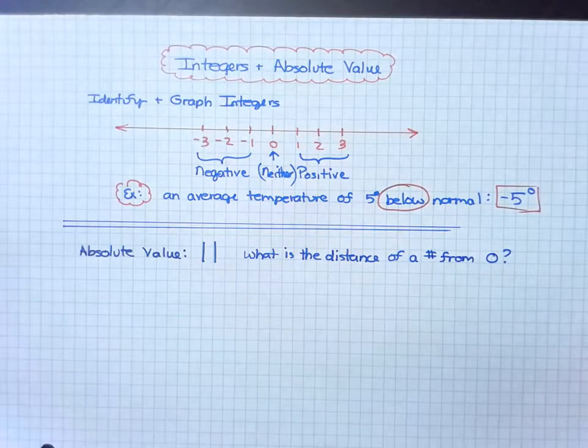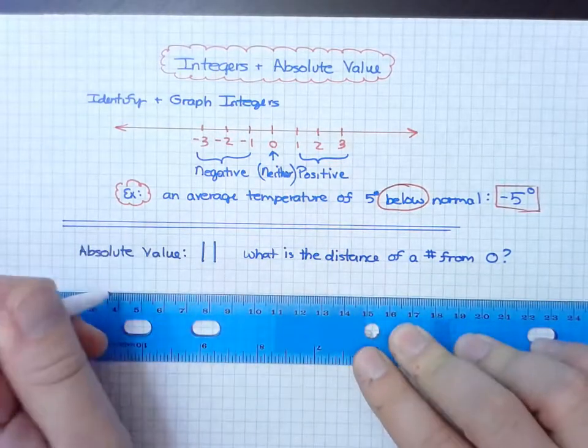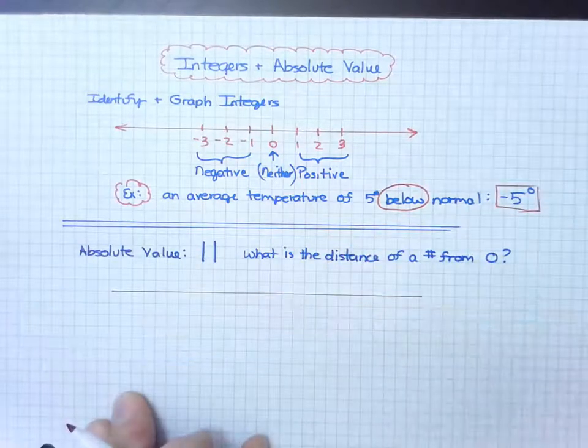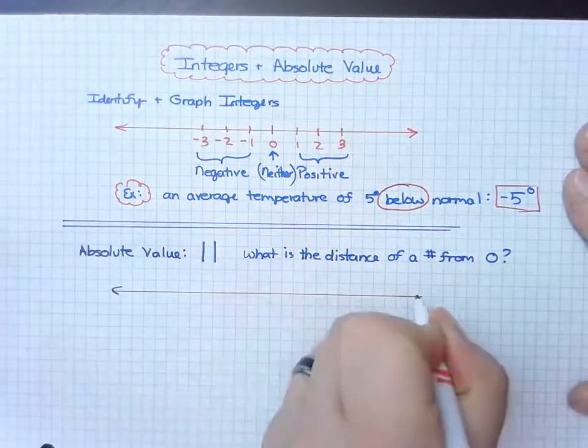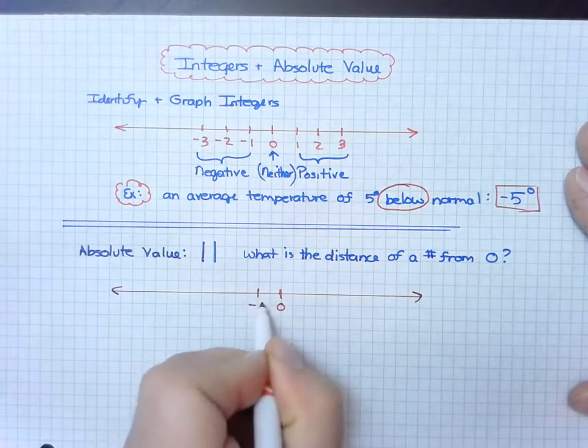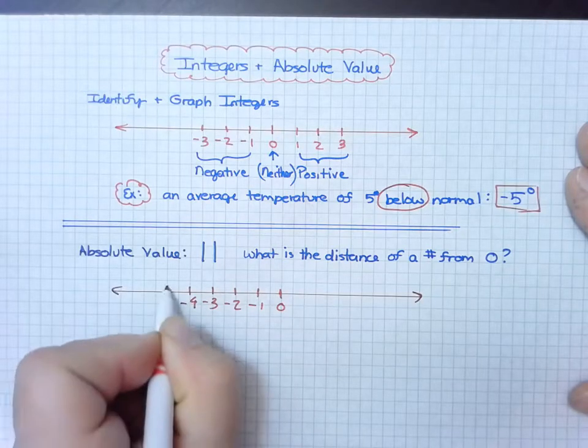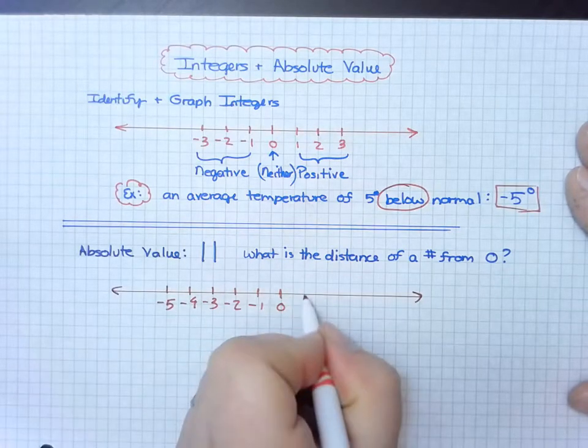Let's draw another number line. We're going to go ahead and put zero in the center, draw some negative integers and some positive integers.